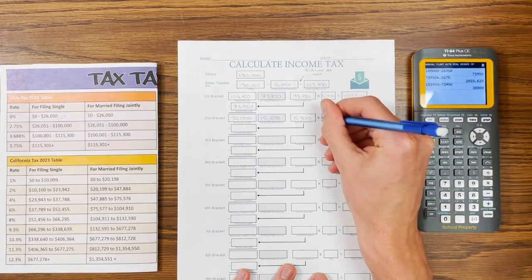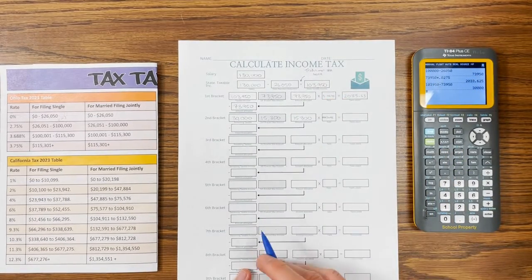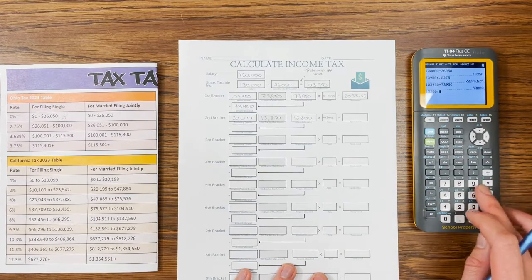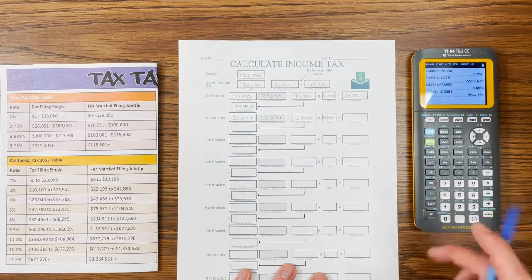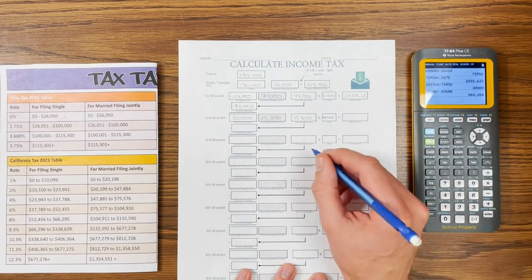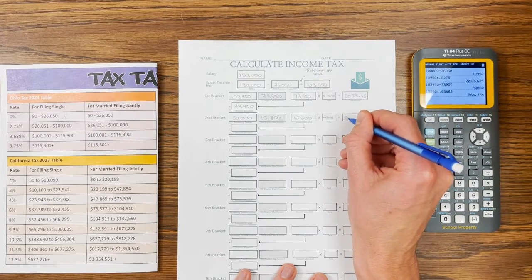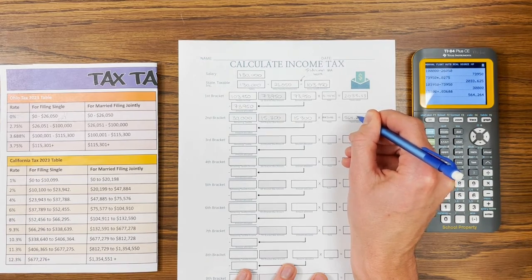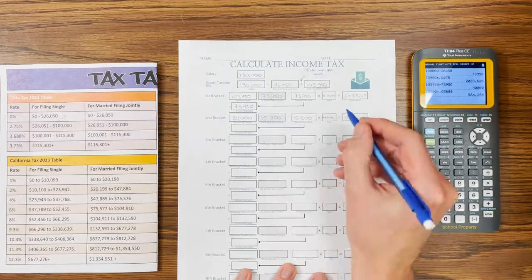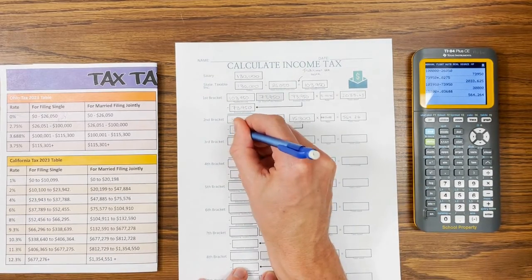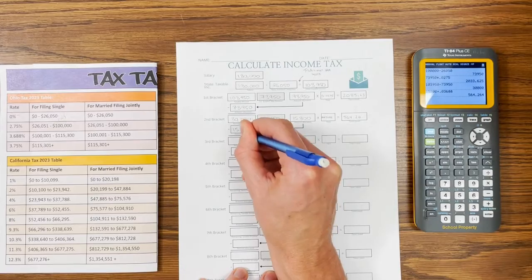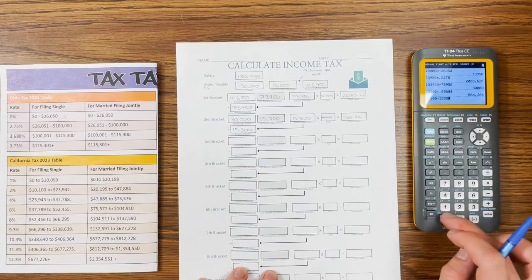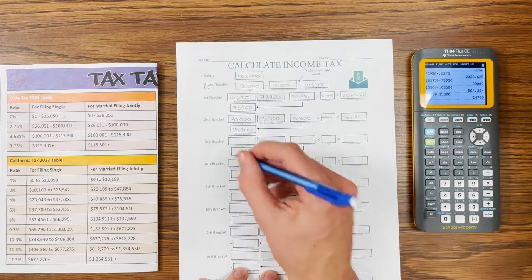So 15,300 times 0.03688. There we go. So we get $564.26. Now that 4 does not technically round up to the nearest whole cent. So my understanding is that this will stay as 0.26. Alright. So we've taxed $15,300. So $30,000 minus $15,300. We got $14,700 left.